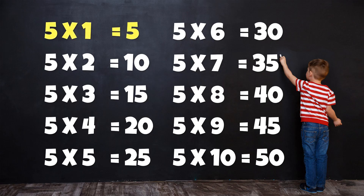Table of 5: 5×1=5, 5×2=10, 5×3=15, 5×4=20, 5×5=25, 5×6=30, 5×7=35, 5×8=40, 5×9=45, 5×10=50.